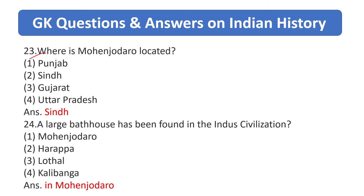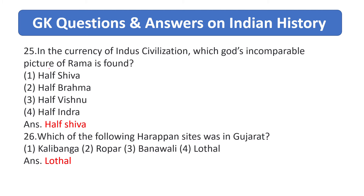Where is Mohenjo-daro located? Answer is Sindh. A large bath house has been found in the Indus civilization — answer is Mohenjo-daro. In the currency of Indus civilization, whose picture comparable to Pashupati (proto-Shiva) is found? Answer is proto-Shiva.